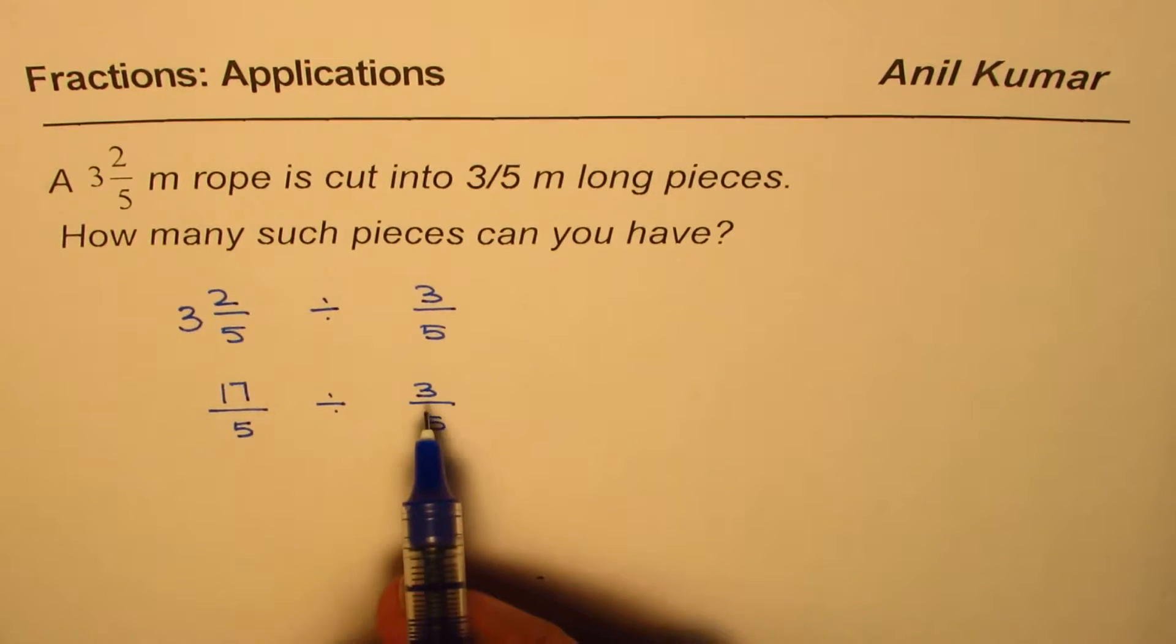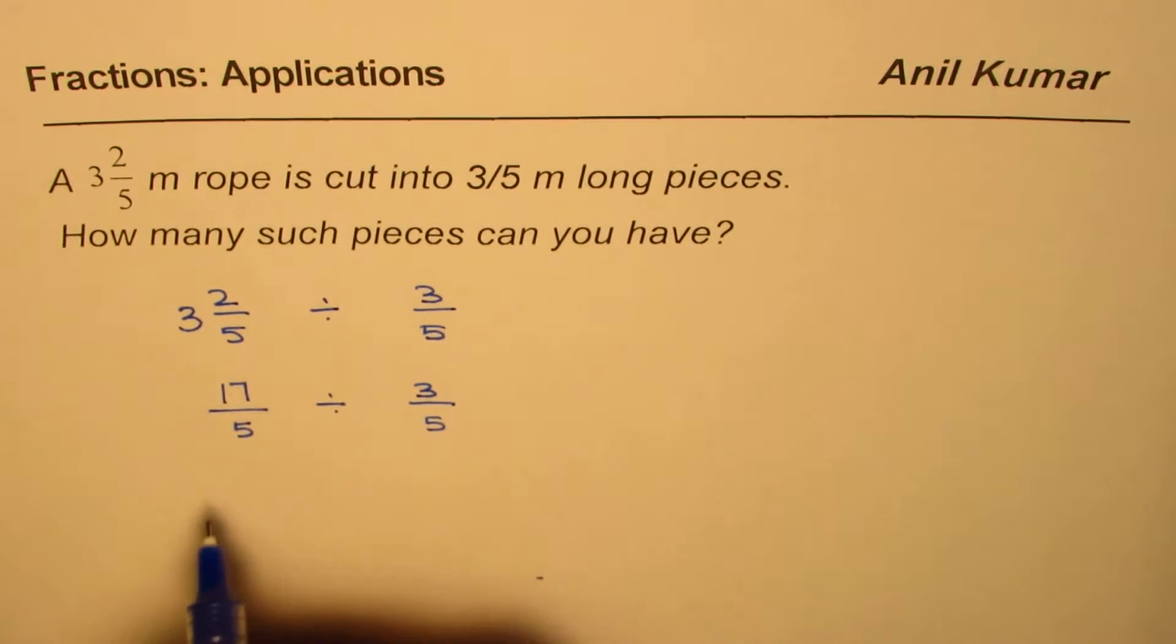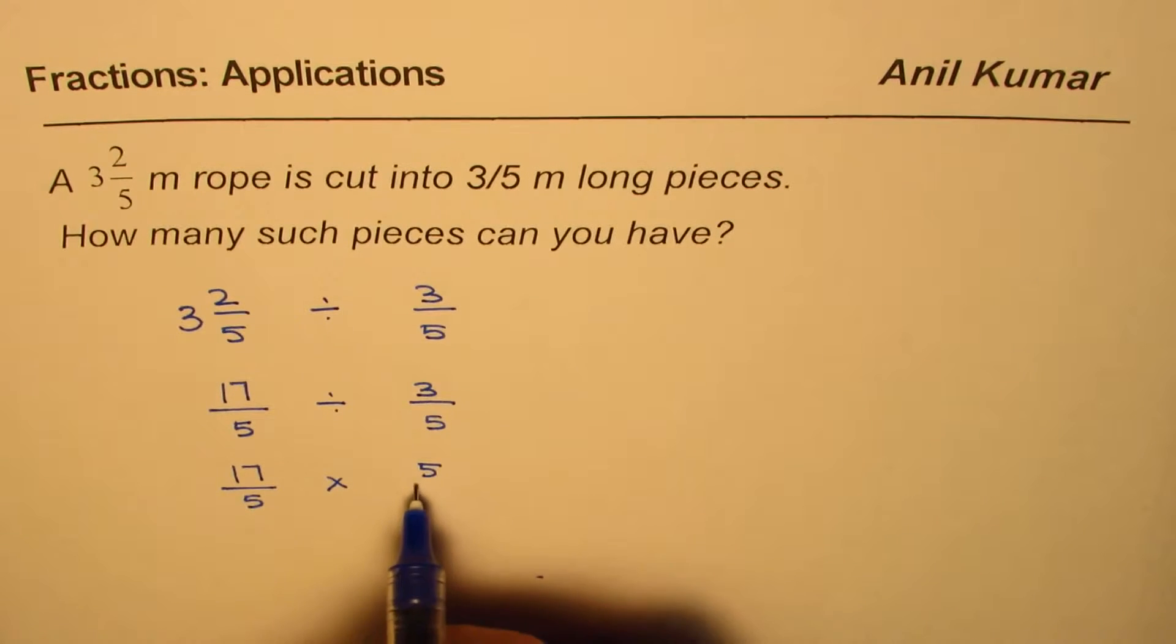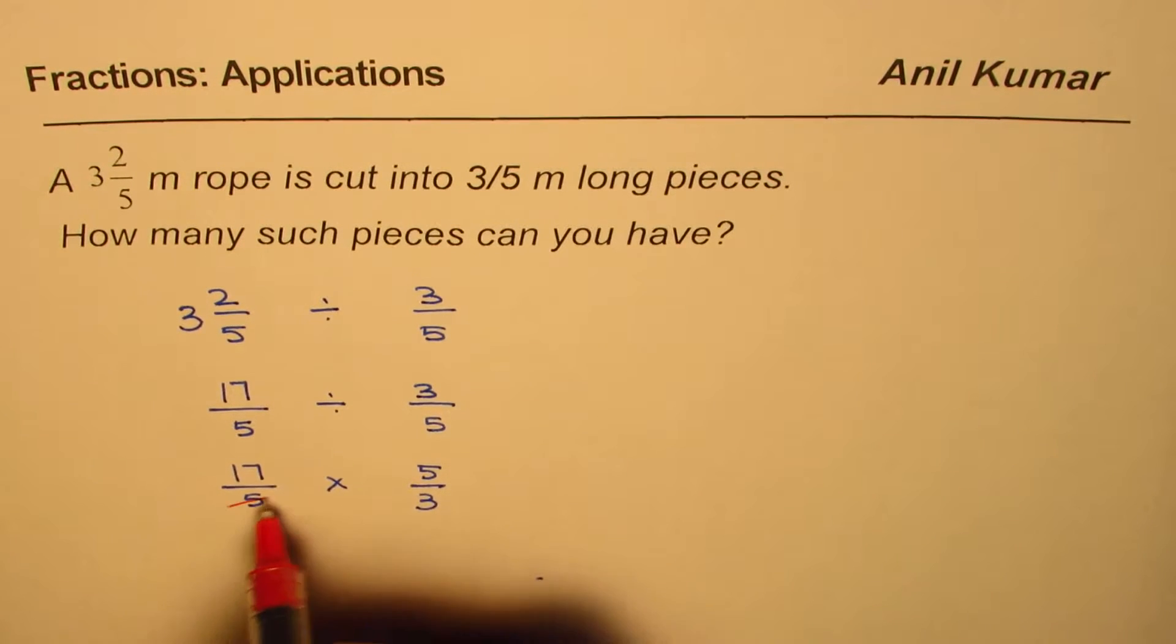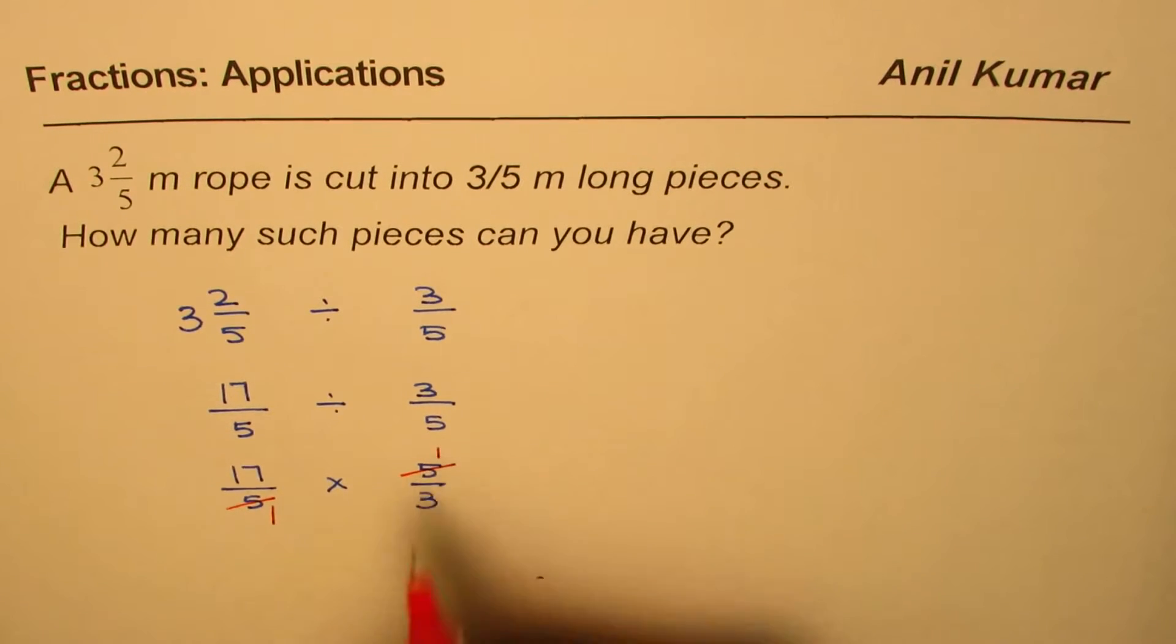Now as you know, division and multiplication are reciprocal. So we'll write this as 17/5 times 5/3. Now before we multiply, what should we do? We should simplify. We can divide these by 5. We get 1.